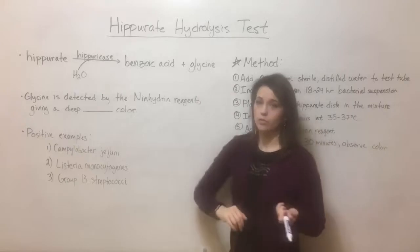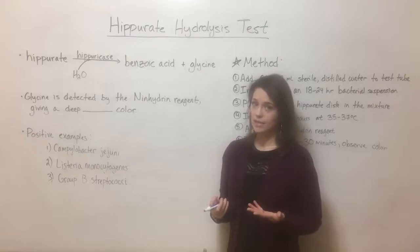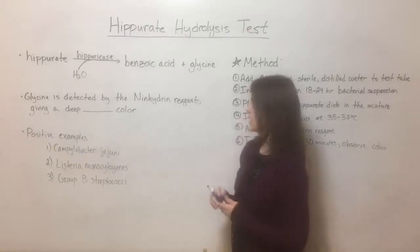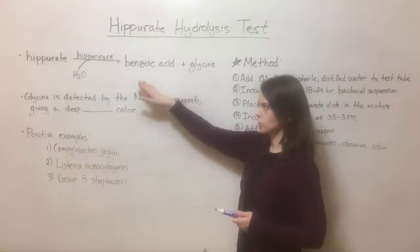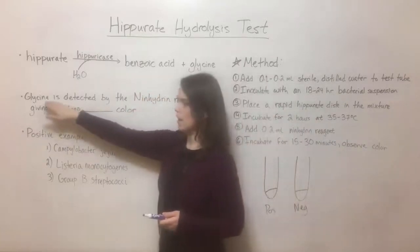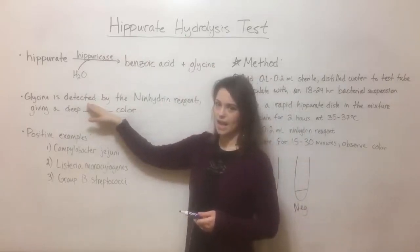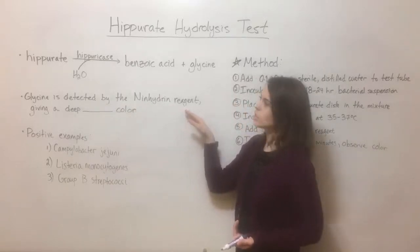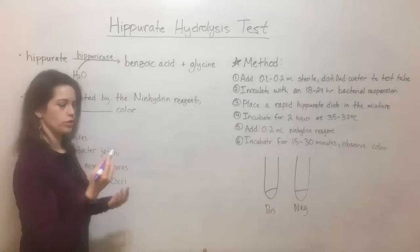Glycine is something you've probably heard of before. Glycine is one of the different amino acids that are building blocks for proteins. It's the simplest amino acid with the simplest kind of R group on it. So glycine is one of the products of this reaction and it is the product that in this hippurate hydrolysis test is detected by an oxidizing agent, a chemical known as the ninhydrin reagent. And so if glycine is present because hippurate has been broken down, then this will give a deep purple color to your tube.